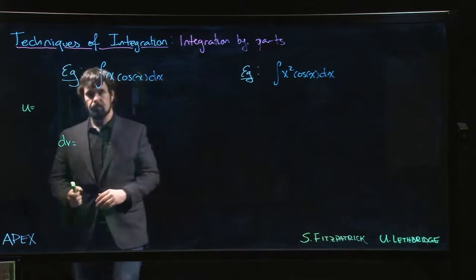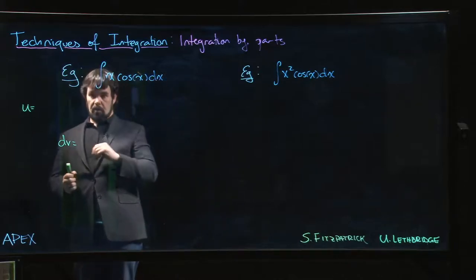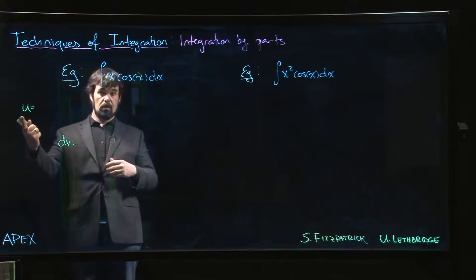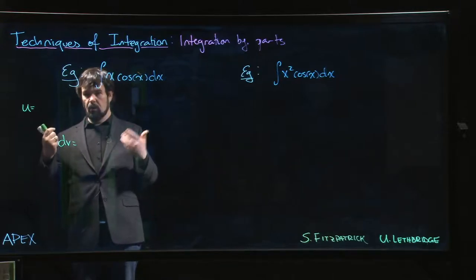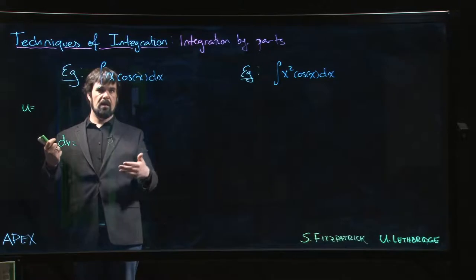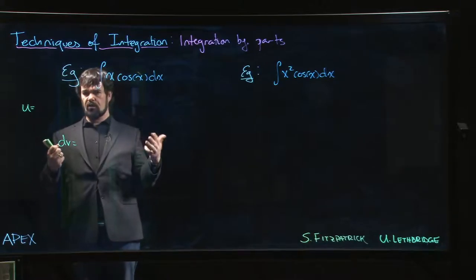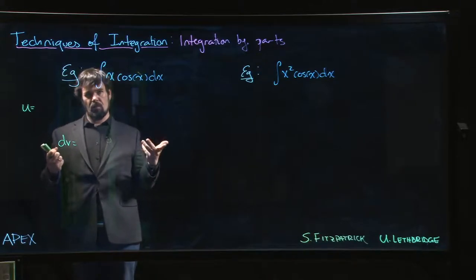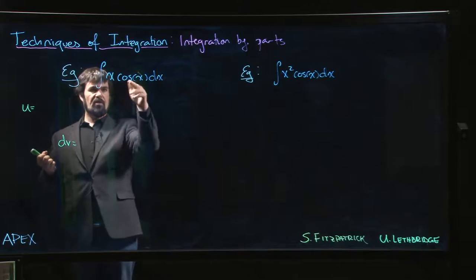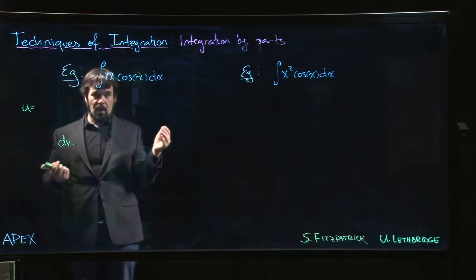So if you have a power function, typically that's your u, right? Any kind of polynomial, that's probably going to be your u. Trig functions, there's no real advantage, there's no simplification that comes from taking u to be your trig function. Sometimes you can.